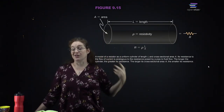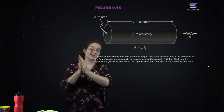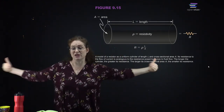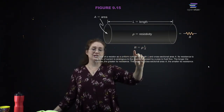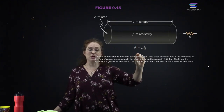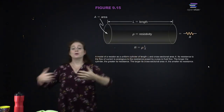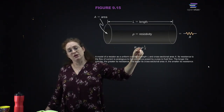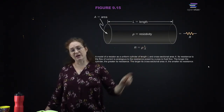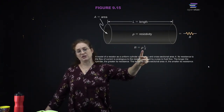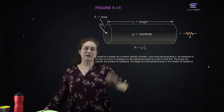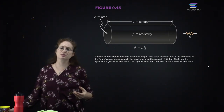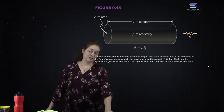The longer an object is, the more it resists charge flowing through it. The resistance is proportional to length and inversely proportional to area — just like bigger pipes allow more water flow. This resistivity is a constant for the material, so you can calculate the resistance of an object given its resistivity, length, and area.